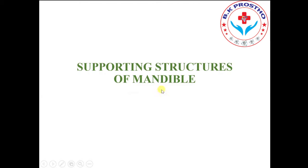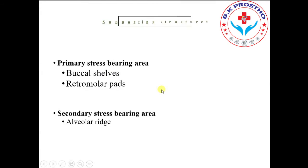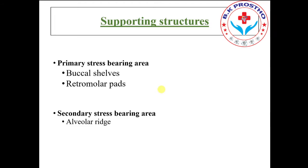Hello everyone. In this video you will learn about the supporting structure of the mandible. Supporting structures, also called primary stress-bearing areas or secondary stress-bearing areas. The primary stress-bearing areas of the mandible are the buccal shelf area and the retromolar pad, while the secondary stress-bearing area is the alveolar ridge.